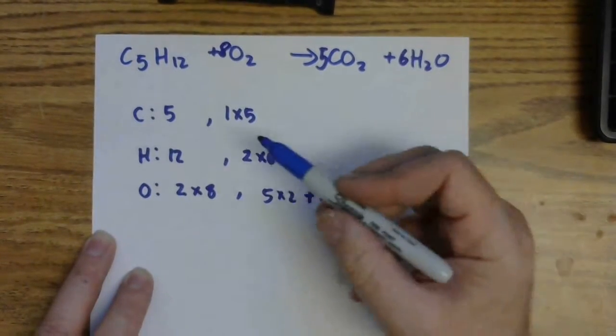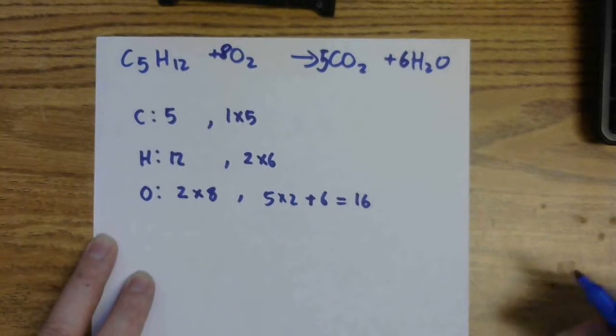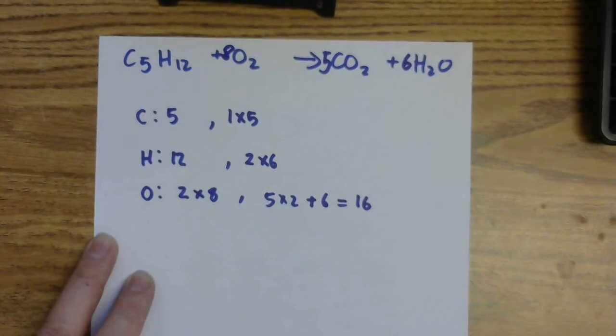Now, this is balanced without any further steps, and all of the coefficients are their smallest possible whole number values. So I am done.